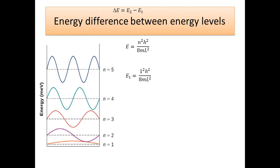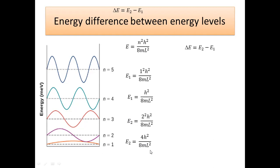Let's calculate the energy of level 1. Since the value of n is 1, taking the square of 1 leaves it the same, so the energy is h²/8mL². Similarly, for level 2 the value of n is 2, and taking the square of 2 gives 4, so the energy becomes 4h²/8mL². Now we can find the difference between energy level 2 and energy level 1, which represents the quantization of energy.